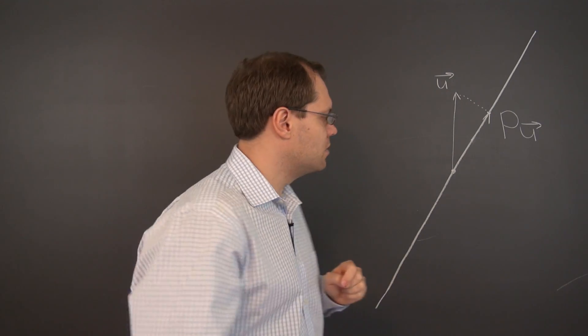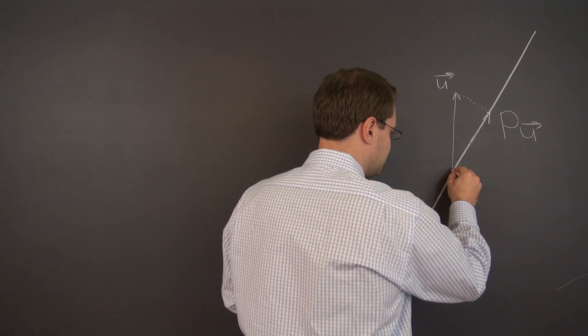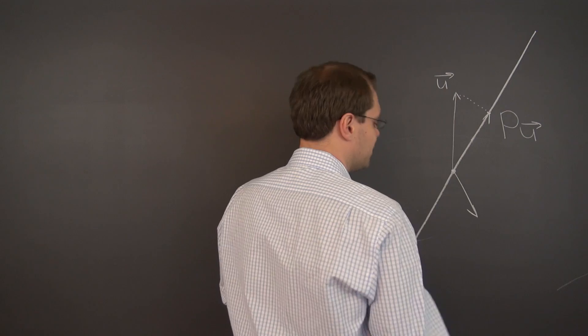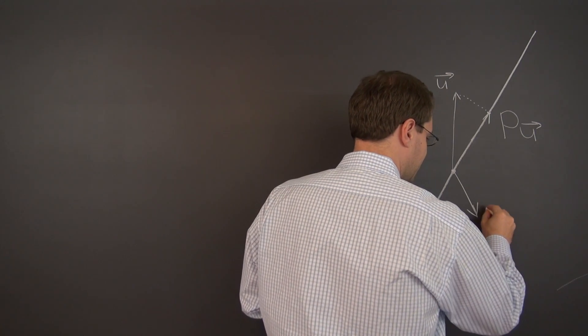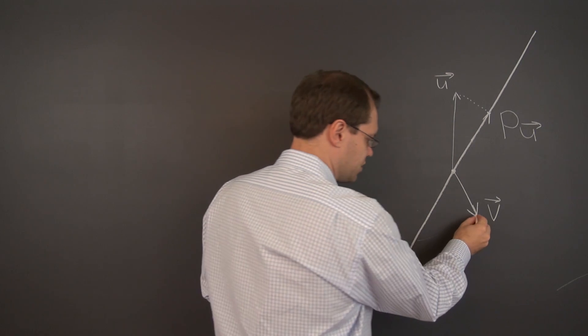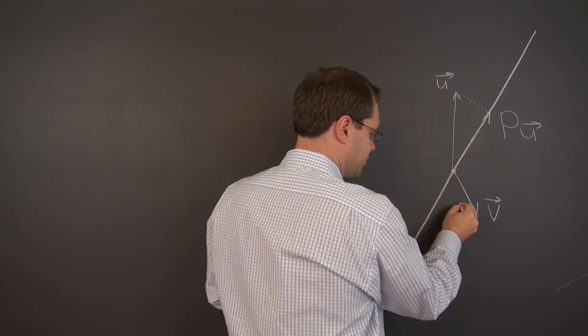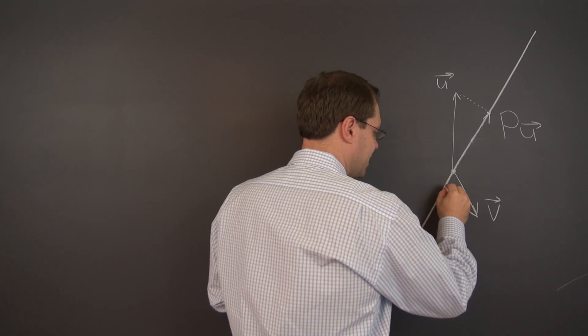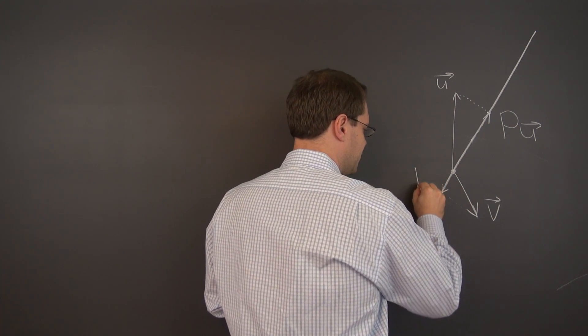Let's consider one more example. How about this vector w. Well, we'll do v. And to project it, draw a straight line through the tip of the vector until you meet the line, and that's p of v.